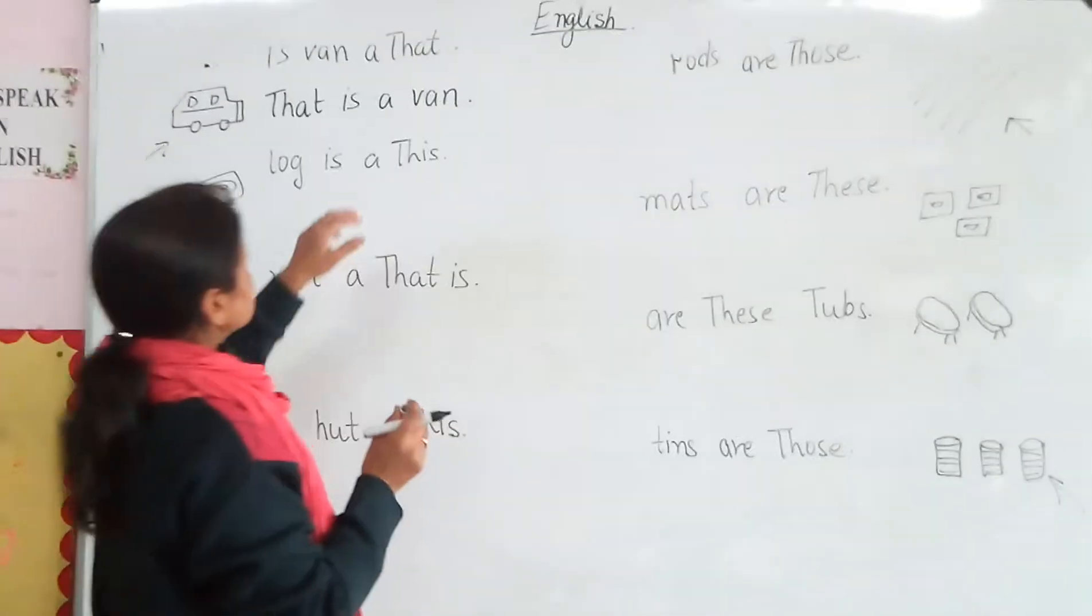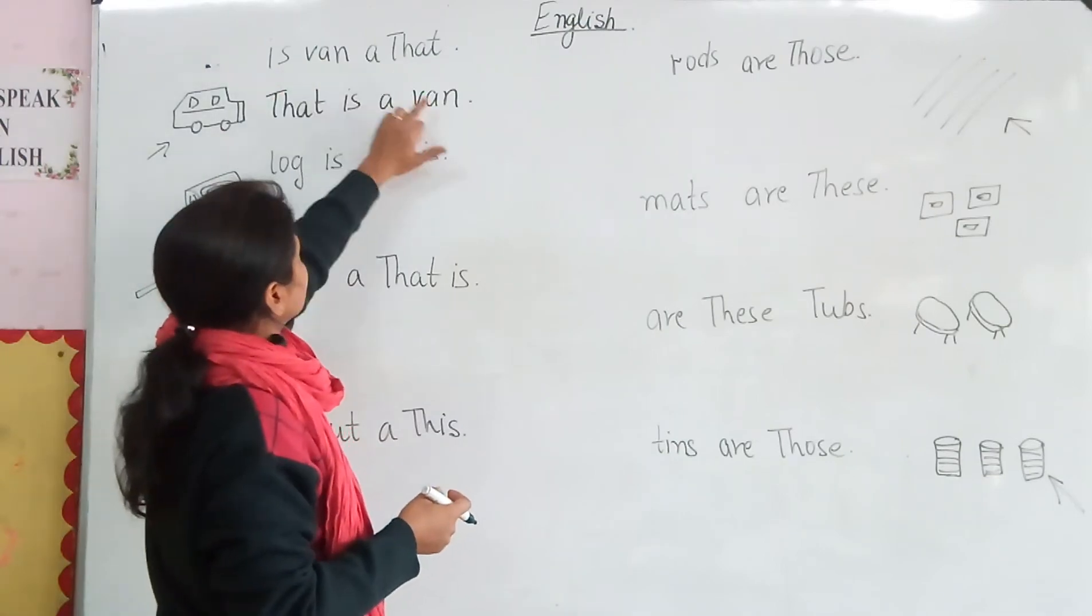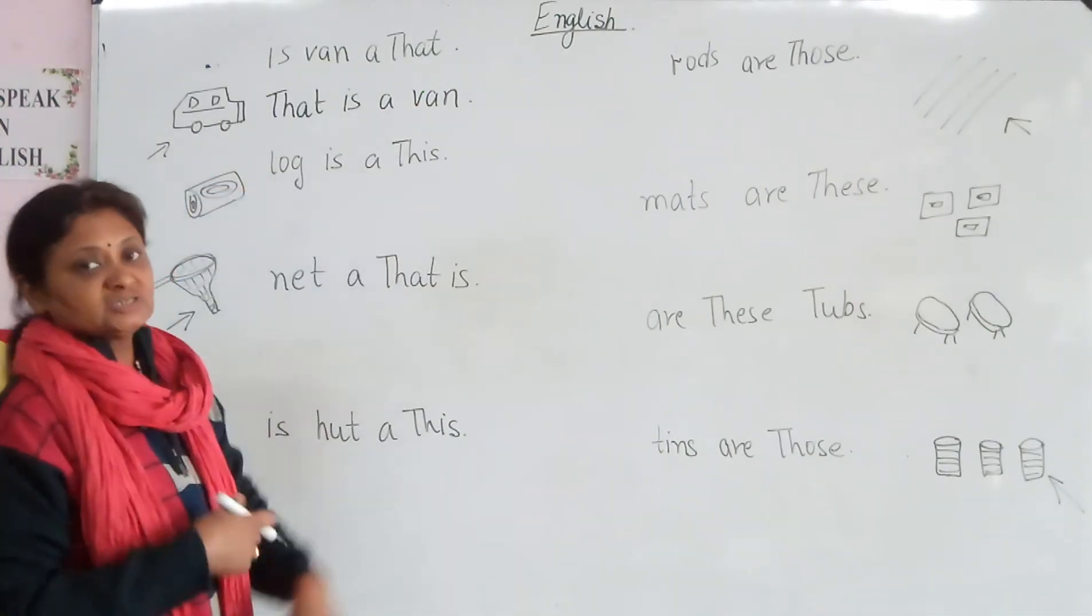For the first example, the word is 'that'. That you can write - that. After 'that' comes 'is', then 'a', okay? So after 'is' I am going to do 'that'. That is a bell. Is that a bell? That is a bell. After 'is' comes 'a bell'. Bell is there. This is a bell.